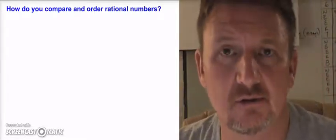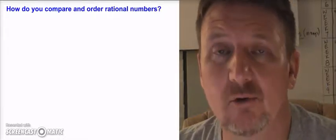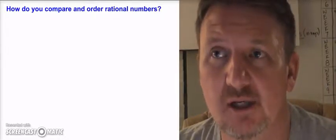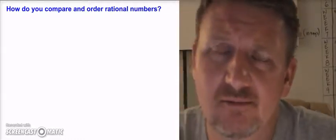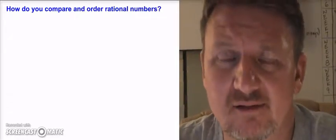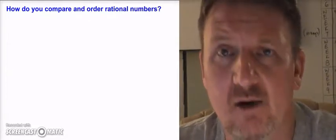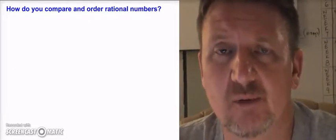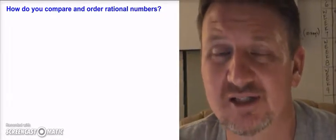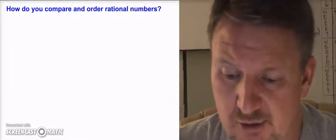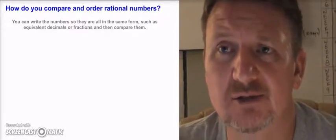Welcome to another edition of Mr. Bell's Math. Today we're going to be talking about comparing and ordering rational numbers. The essential question I want you to know by the time we finish this video is how to compare and order rational numbers. Remember, rational numbers are pretty much all the numbers: whole numbers, negative numbers, zero, decimals, and fractions.